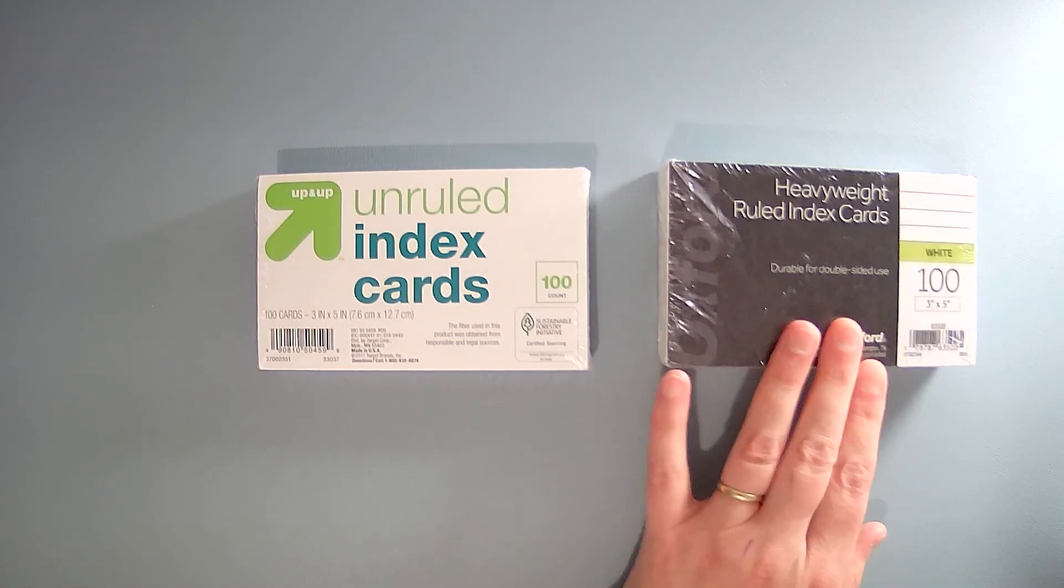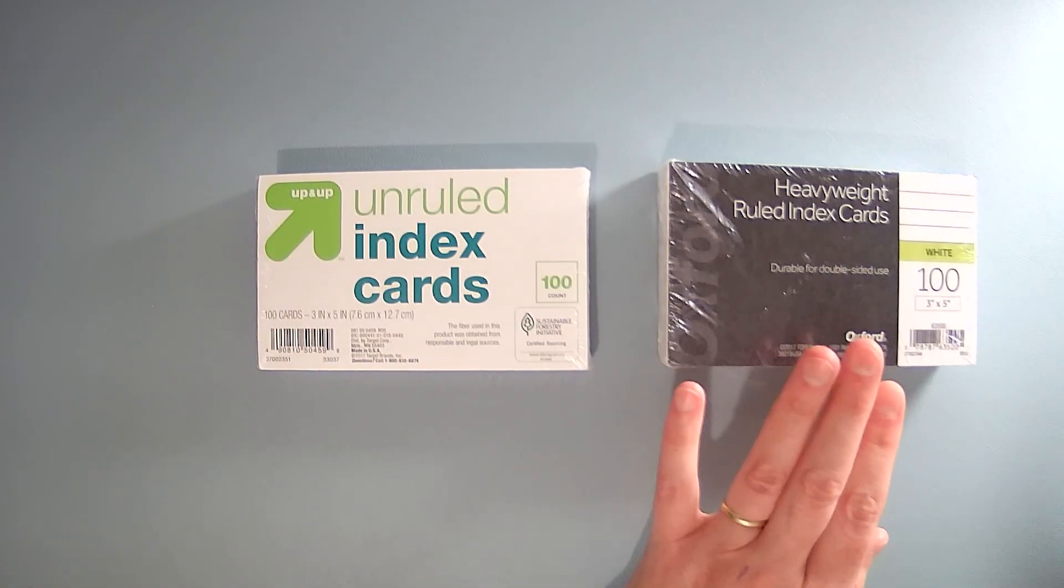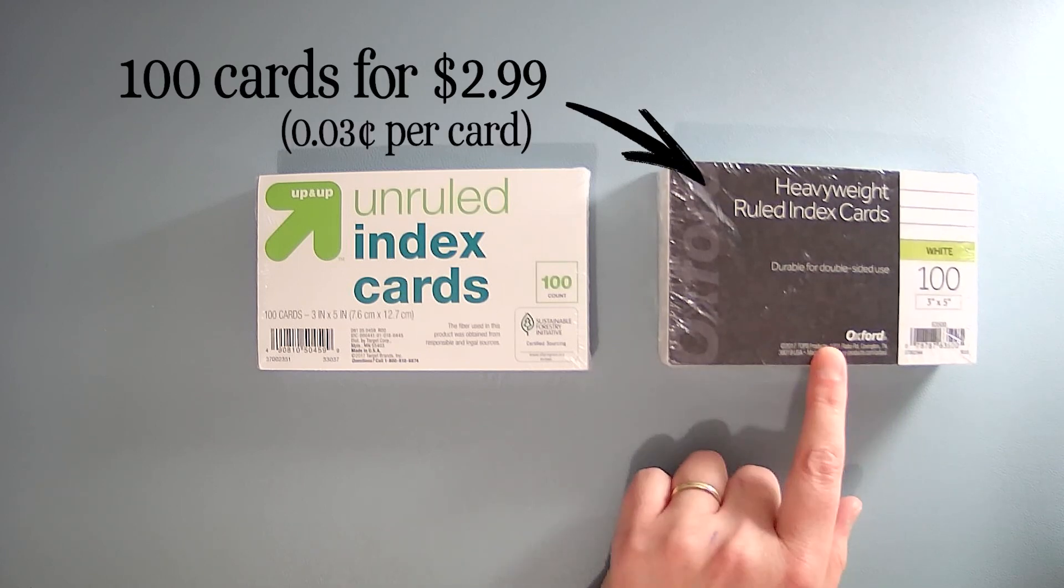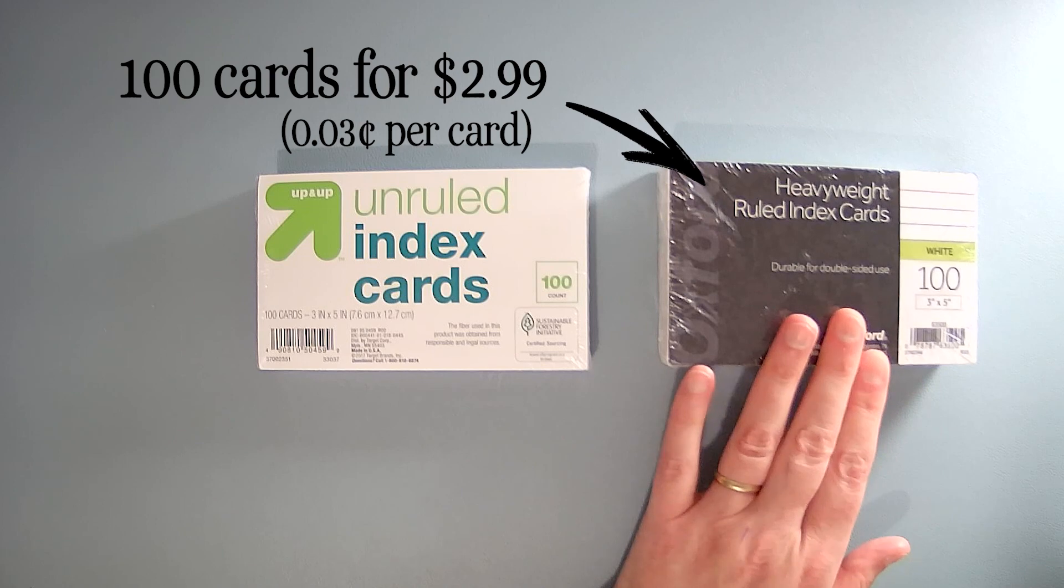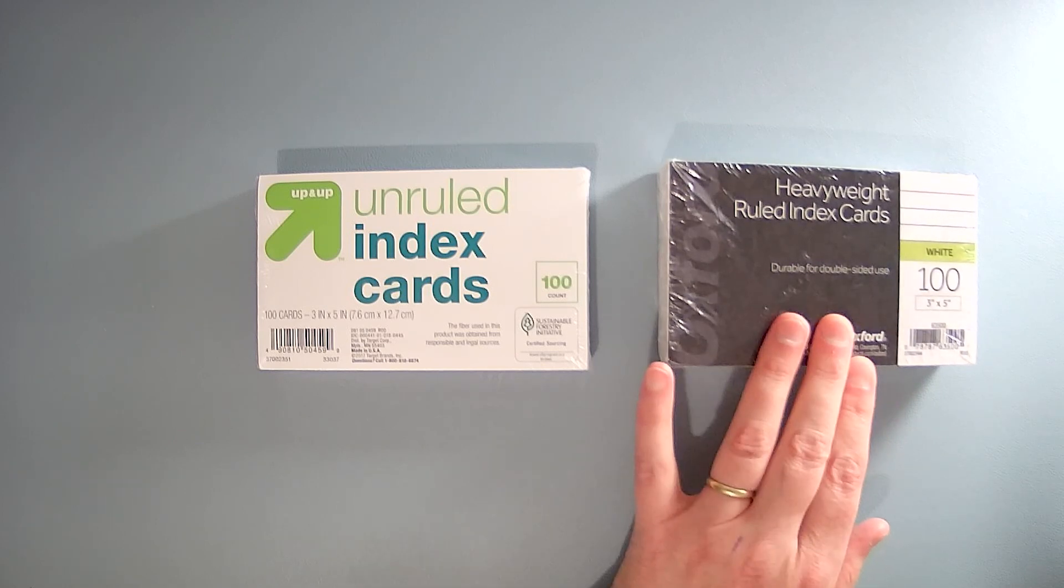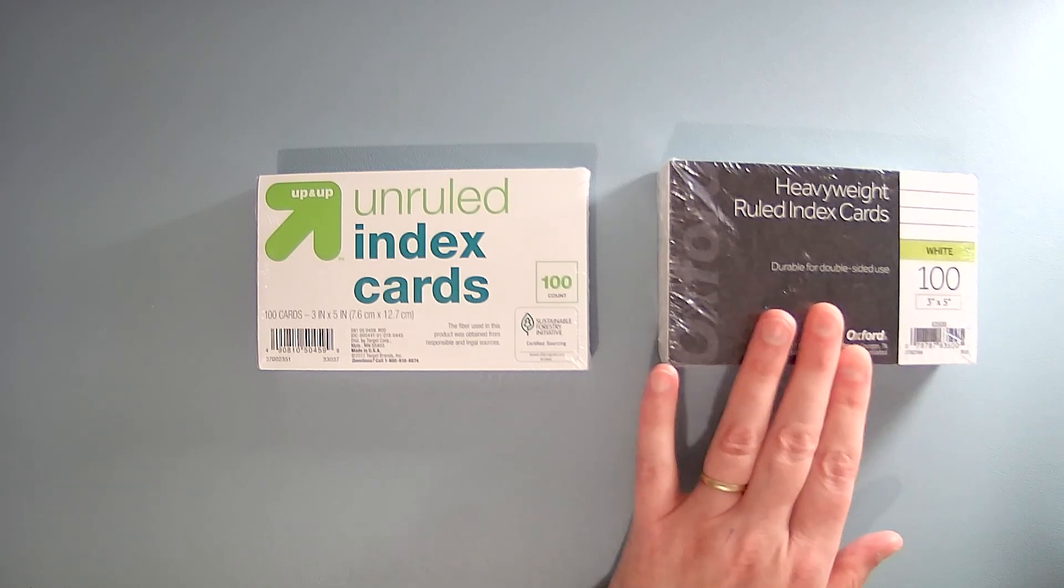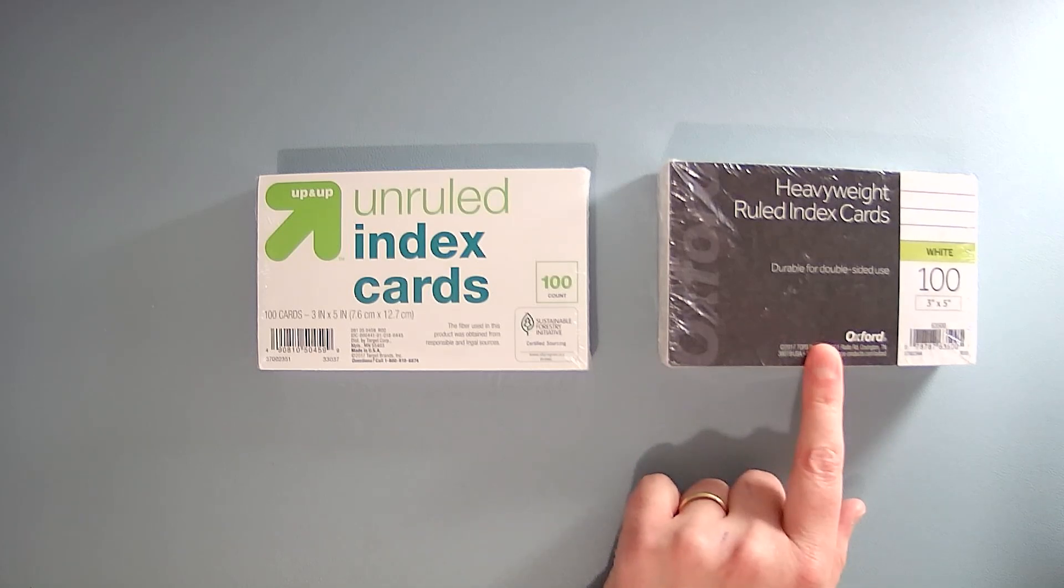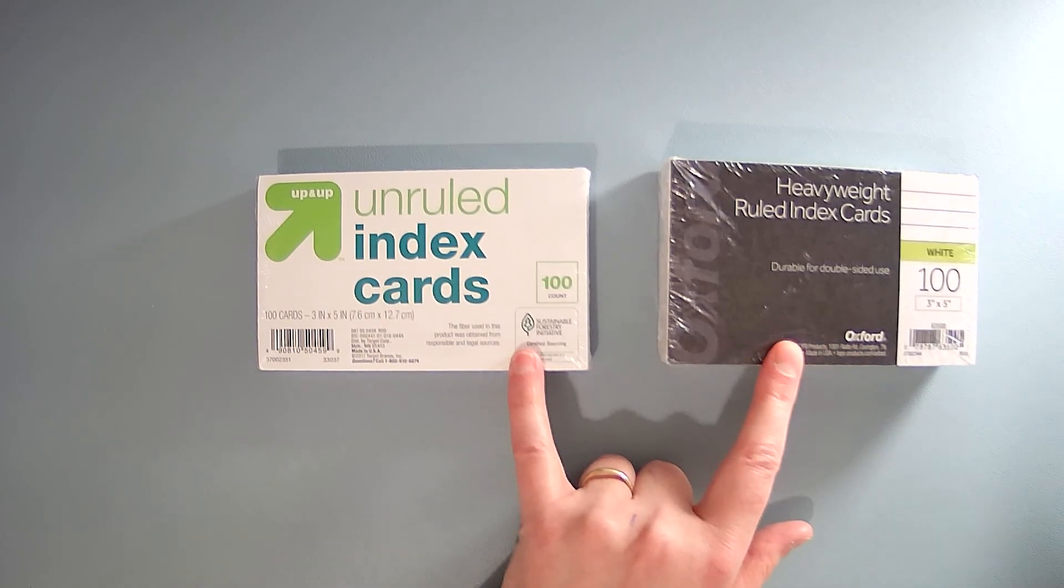Now the Oxford heavyweight ruled cards, they're a bit more of an investment. These are $2.99 usually for $100 and I can only find these on Amazon. Now $2.99, again, it's an investment. However, I can often find these on sale for $1.99 a package. And when I do, I stock up. Because again, I only use these two kinds of cards.